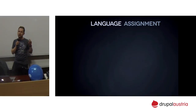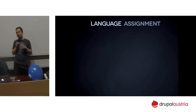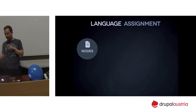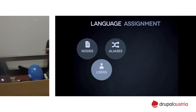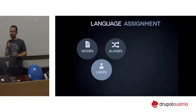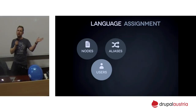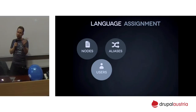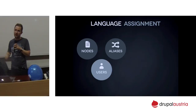The bigger problem in Drupal 7 is we don't know the language of your things. We know the language of your nodes, path aliases, and users. But we don't know the language of your menu items, views, taxonomy terms, or whatever else. Drupal 7 assumes those have the language of your site, and a lot of people run into problems when they try to change the default language — those assumptions totally fall apart and everything breaks.